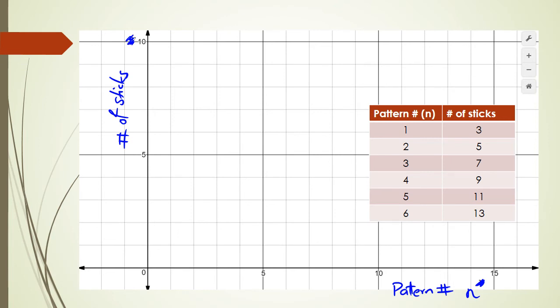So my first point is when pattern number one, it requires three sticks. So that's that point. When it's pattern number two, I require five sticks. Pattern number three requires seven. Pattern number four requires nine. Now, I don't actually have enough room to do pattern number five to 11 sticks. As you can see, I don't actually have the grid here.